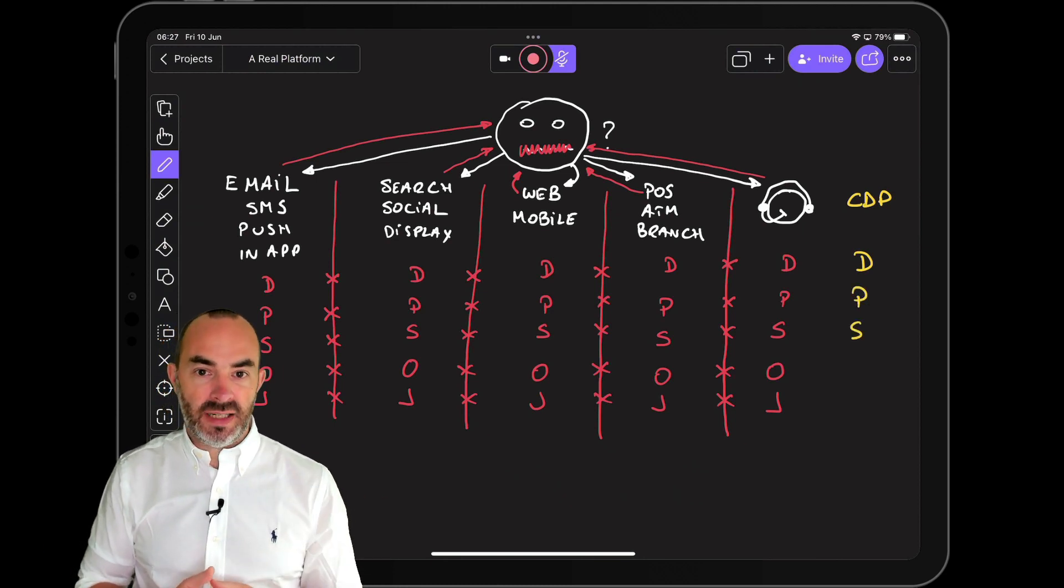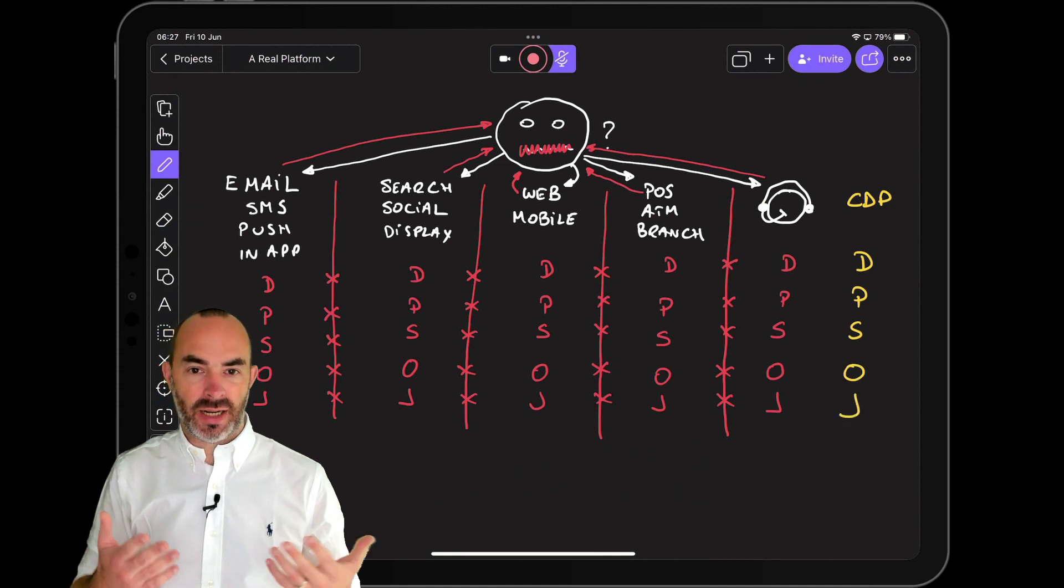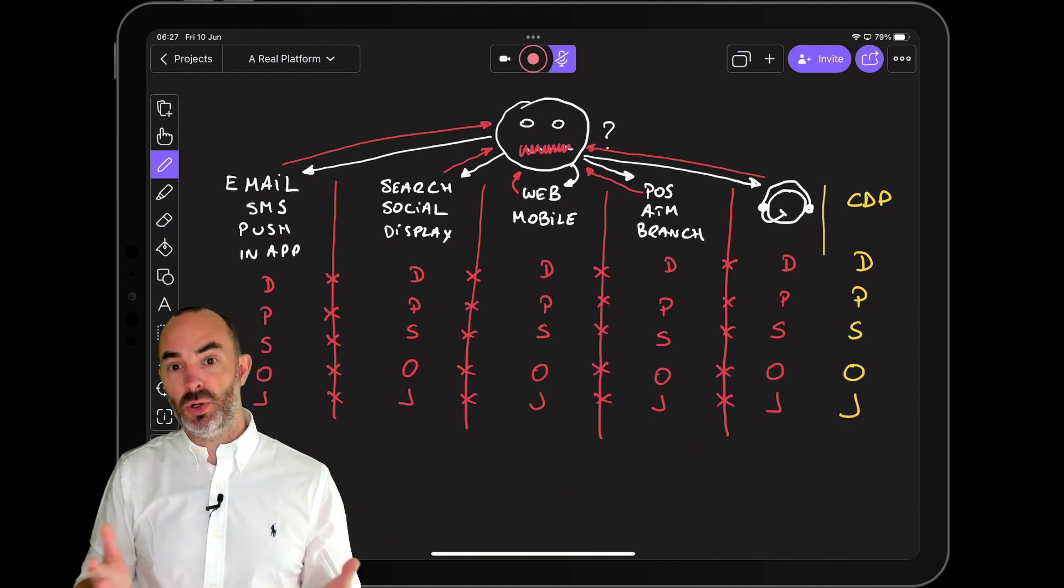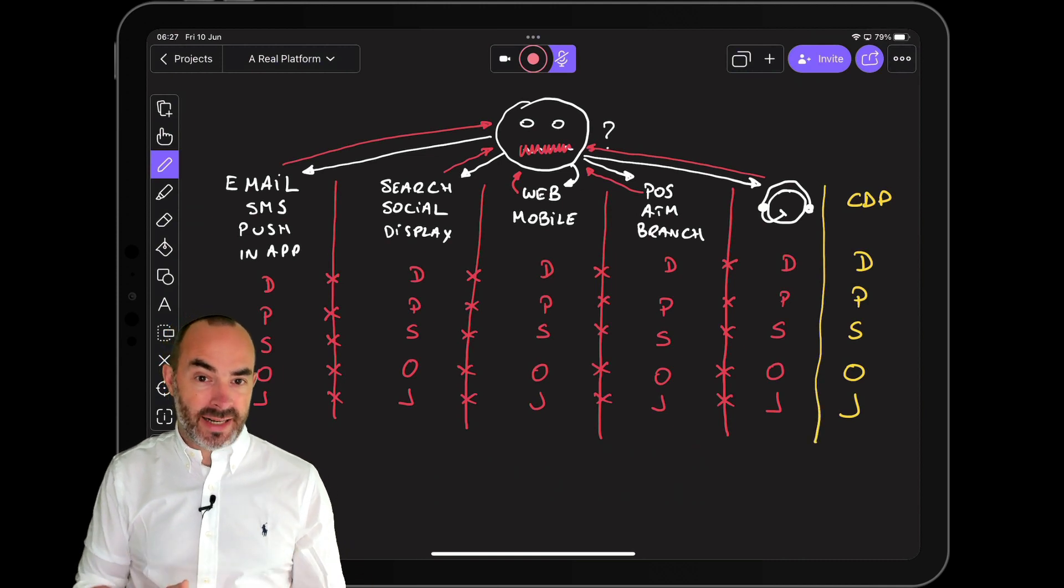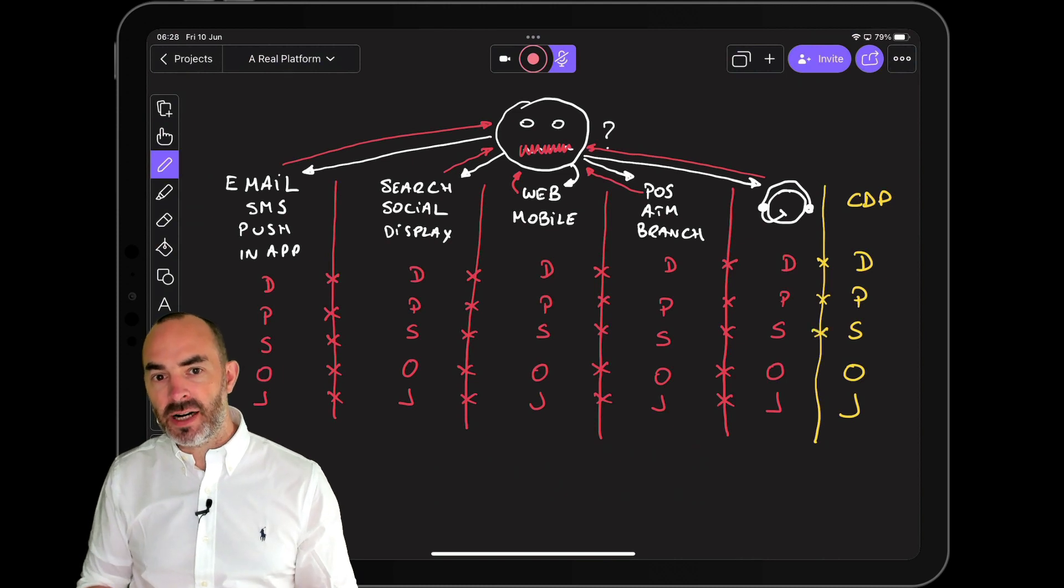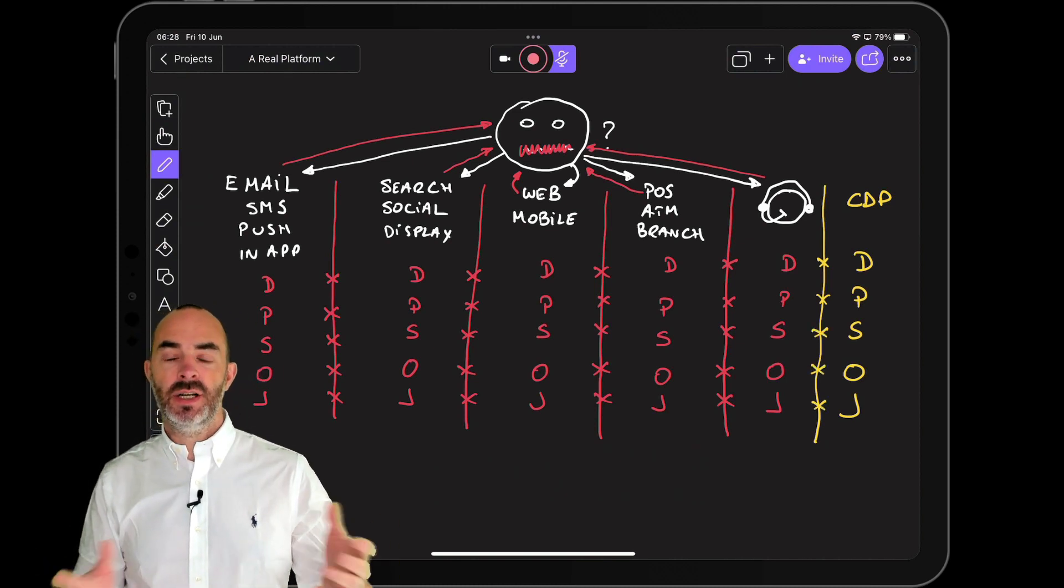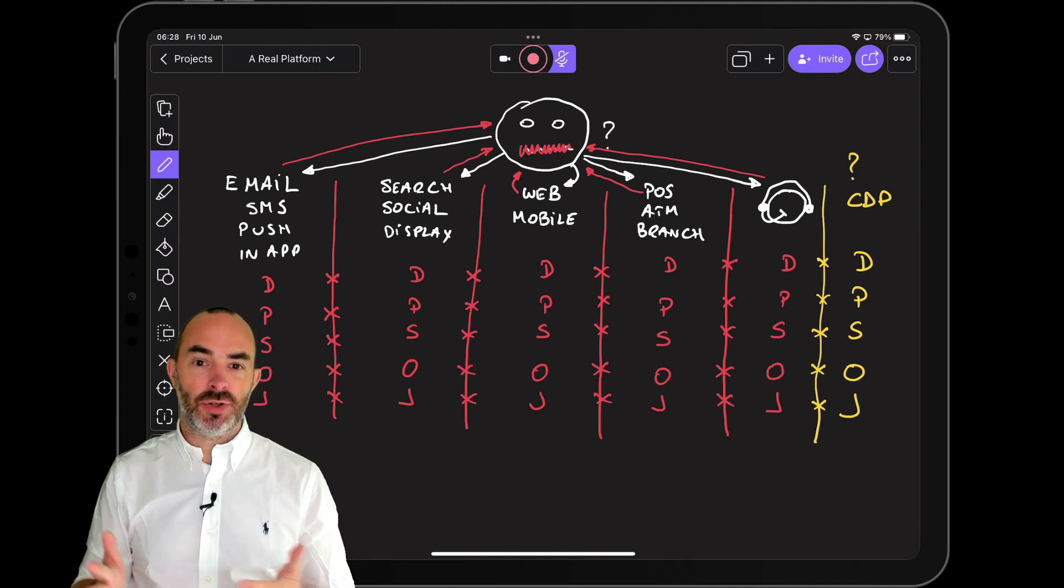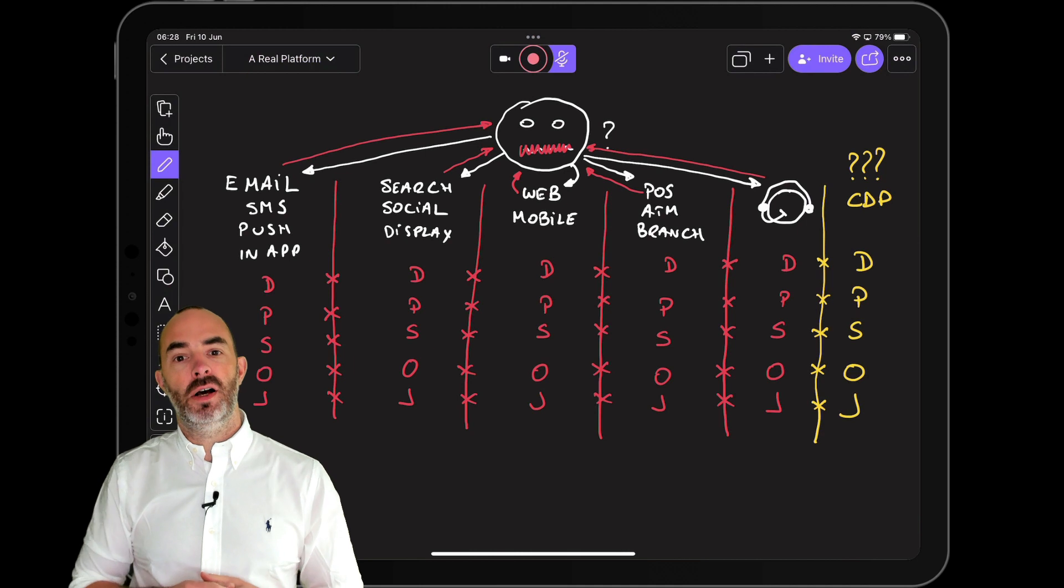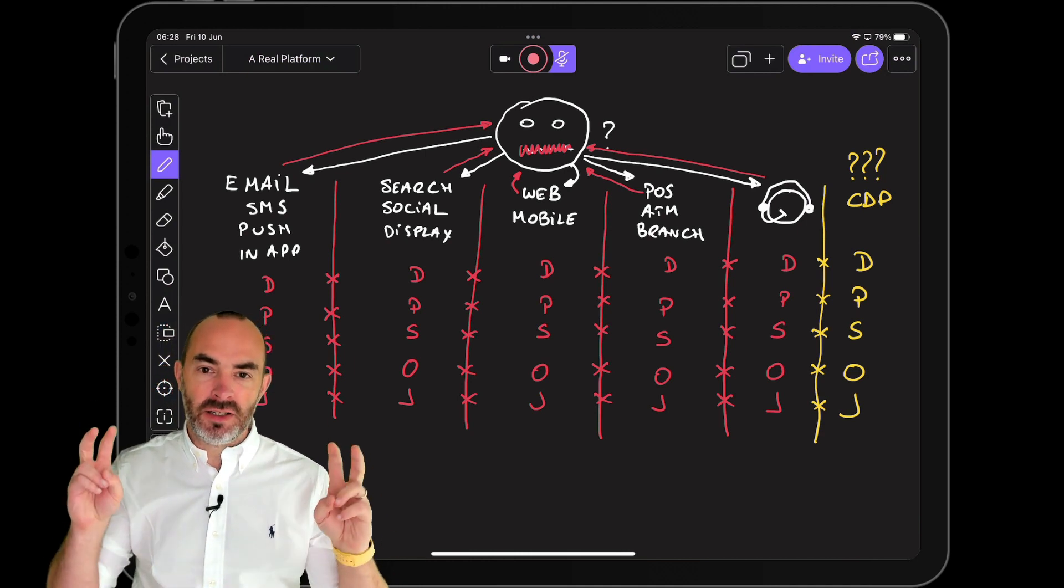The first option means that you buy a point solution CDP and you implement it into your ecosystem, just like in the old days. You introduce a new application that comes with a new data store, a new profile store, a new segmentation environment, a new offer environment, and a new journey environment. And next, you try and connect as many other data sources to it, and you try and create a new single view of your customer, which in reality is maybe the 15th single view of your customer.